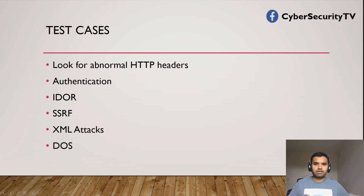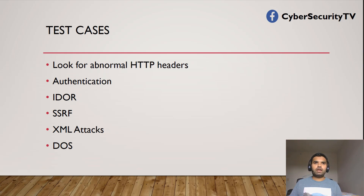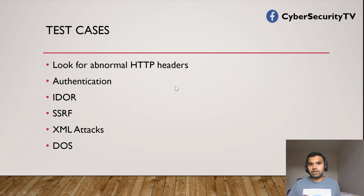DoS — this is something you definitely want to check for: whether the API has throttling enabled. Throttling means limiting how many times a user can make a request to the API. If someone runs Burp Intruder and sends thousands of requests per second, it would exhaust resources and lead to denial of service. Make sure some throttling is implemented — either by code or using something like AWS API Gateway.